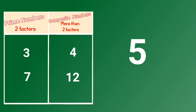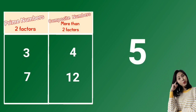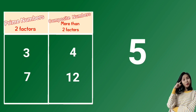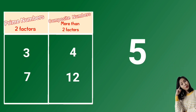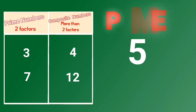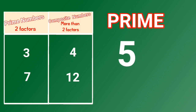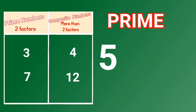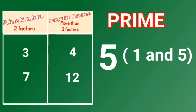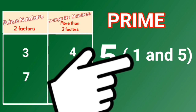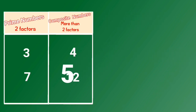How about 5 — prime or composite? Yes, 5 is a prime number. How did you know? You asked yourself: what are the factors of 5? Only two factors — 1 and itself. Therefore, 5 is a prime number.